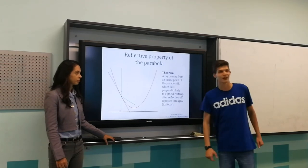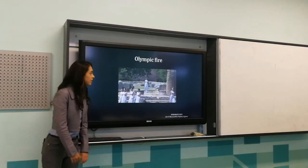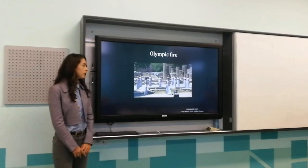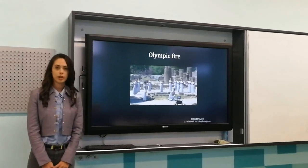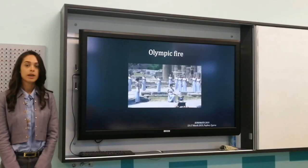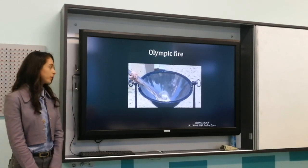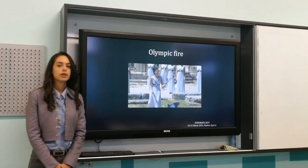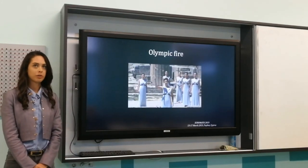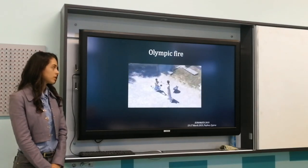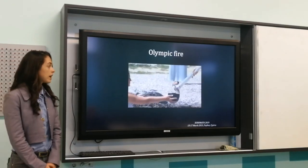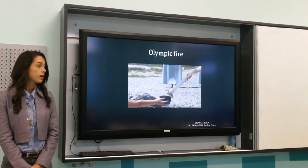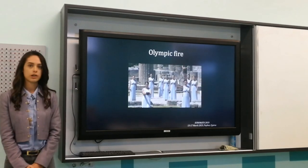Now Gaia will tell you more about the reflective property. Here you can see a real-life example of the reflective property. This is a video about the lighting of the Olympic fire, which happens every time before the Olympic Games. It is believed that God, along with His grace, strength and power, sends rays and lights the torch. But what really happens is that this object — this reflector — is a parabolic mirror, which has the same properties as the parabola. Rays coming from the sky reflect off its surface and gather in one point, which is its focus, and the lady puts the torch in it — this is how the fire is lit.